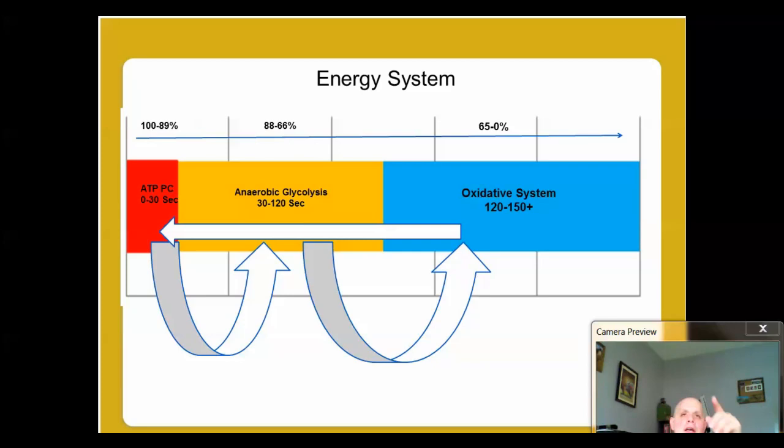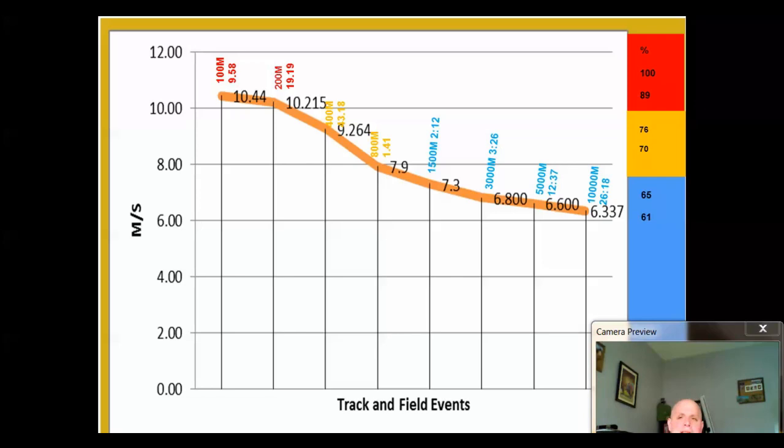All these energy systems are responsible to develop ATP-PC. Some do it better than others, but they are usually indicated by time and by intensity. And then by the intensity, we know that one energy system might be dominant, but the other energy systems are still working to contribute their fair share to develop more ATP. So don't look at this linearly. I encourage you guys to look at it like in a circular format.